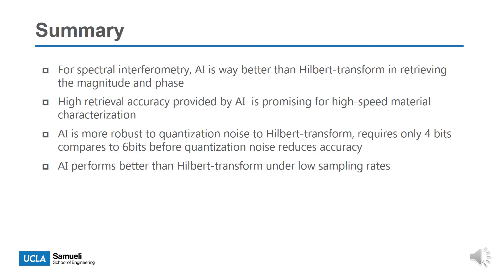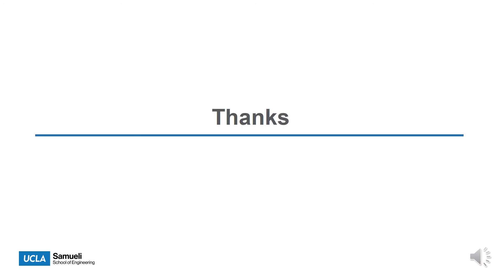To summarize, for spectral interferometry, AI is far better than the Hilbert method in retrieving the magnitude and phase. The high retrieval accuracy provided by AI is very promising for high-speed material characterization. Furthermore, AI is more robust to quantization noise, requiring only 4 bits compared to 6 bits, and AI performs much better than the Hilbert method under low sampling rates. Thank you for your attention.